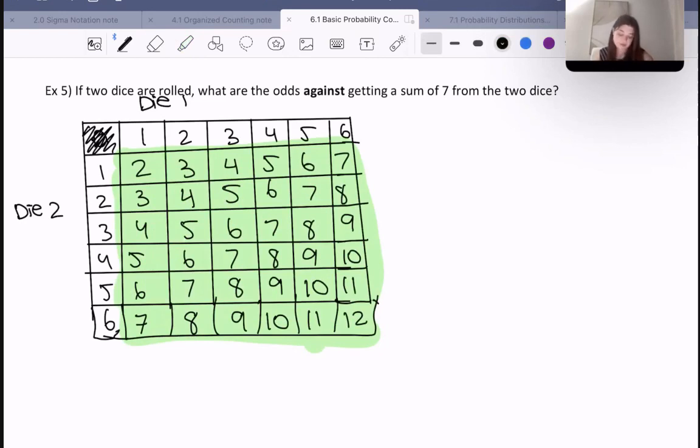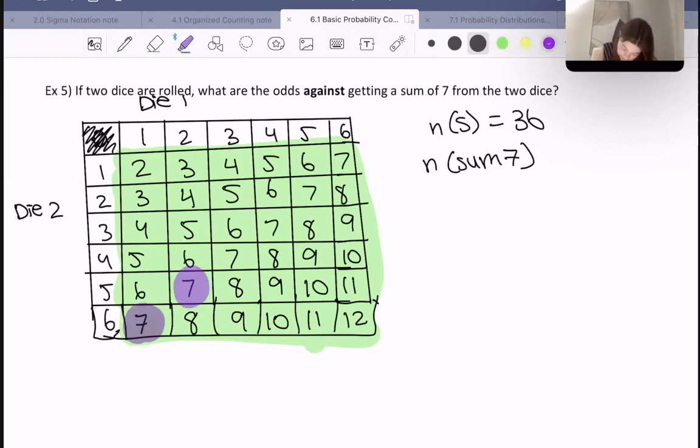What are the odds against getting a 7? What are the total number of outcomes? There's 36 outcomes, 6 times 6. What is the number of things that would give us a sum of 7? Let's highlight them in purple. I have seven, seven, seven, seven, seven, seven—that's six sevens.